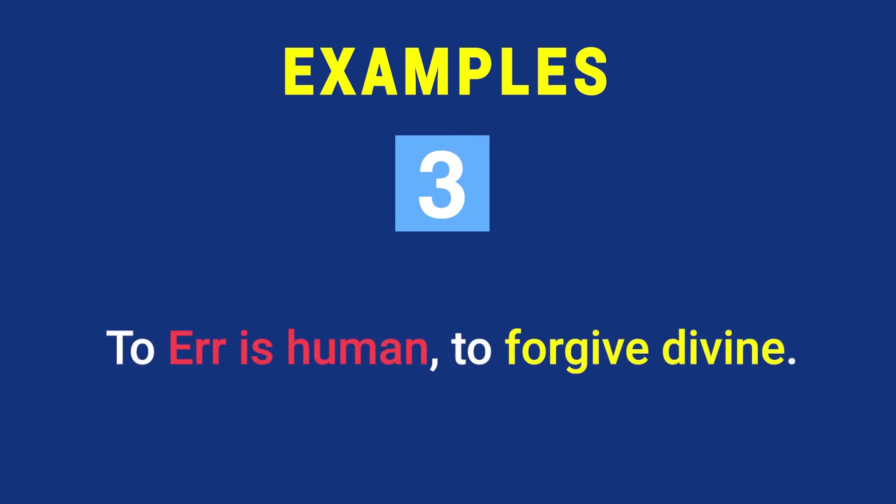Example number three: 'To err is human, to forgive divine.' There is opposition in terms of both ideas and words. Word-wise, err is opposite to forgive and human to divine. There is a perfect balance in the sentence and yet there is an emphasis on the ideas. Therefore the figure of speech involved here is antithesis.